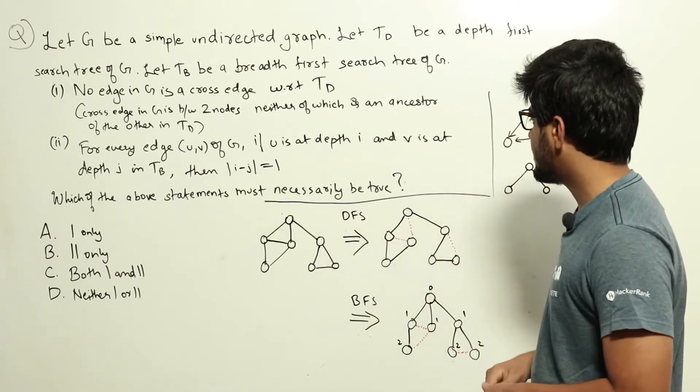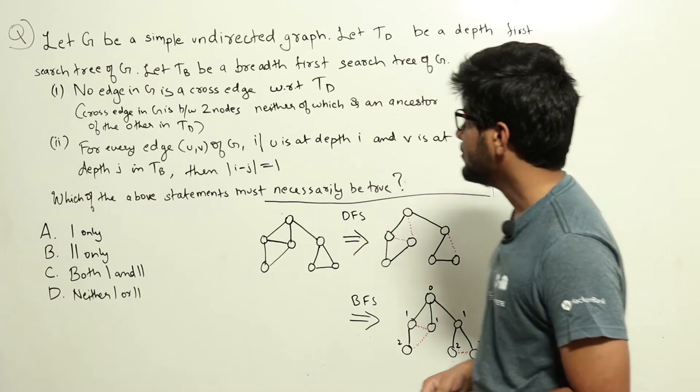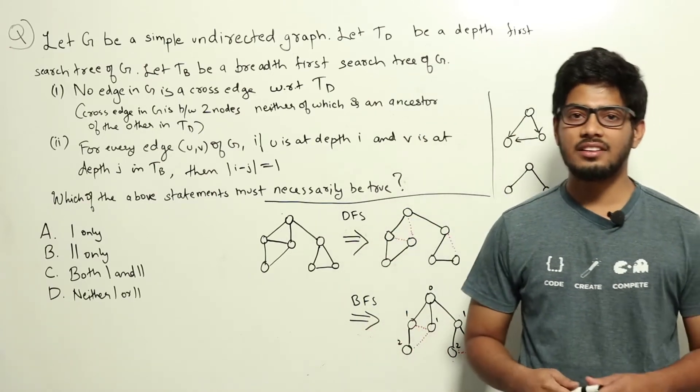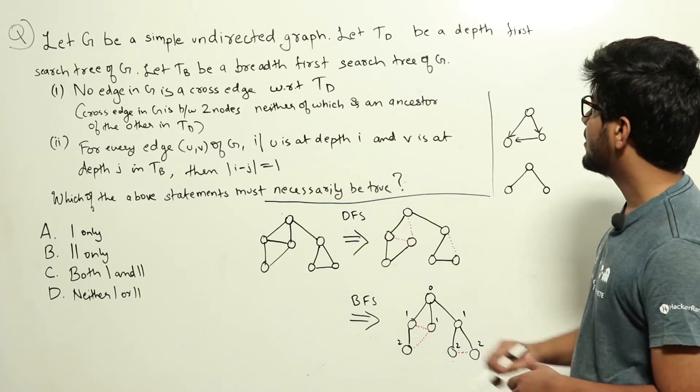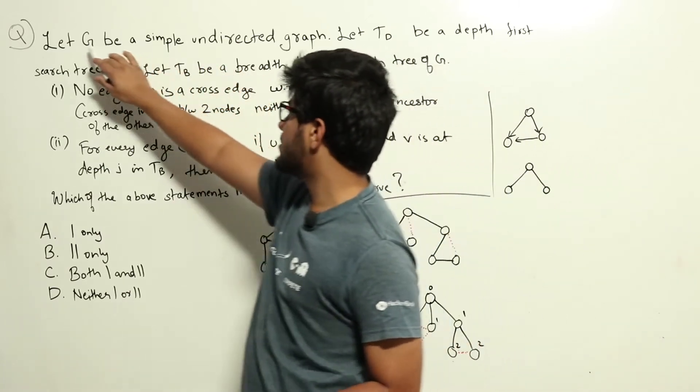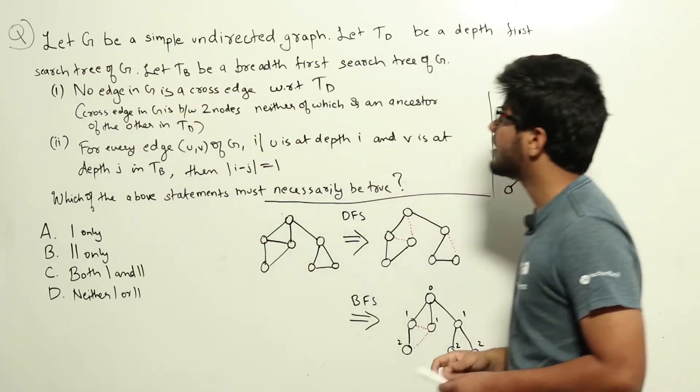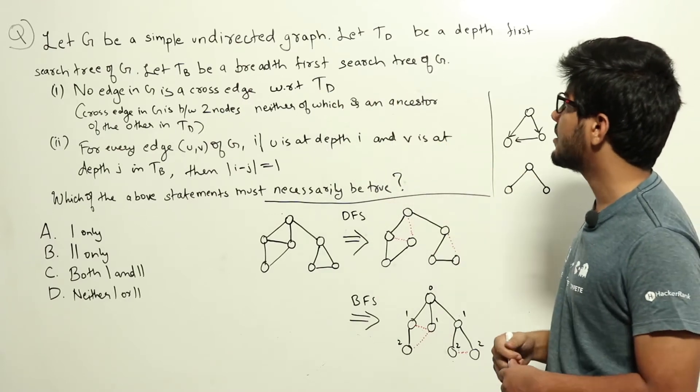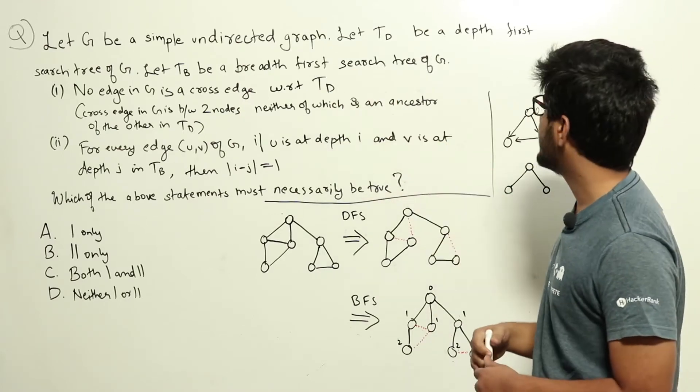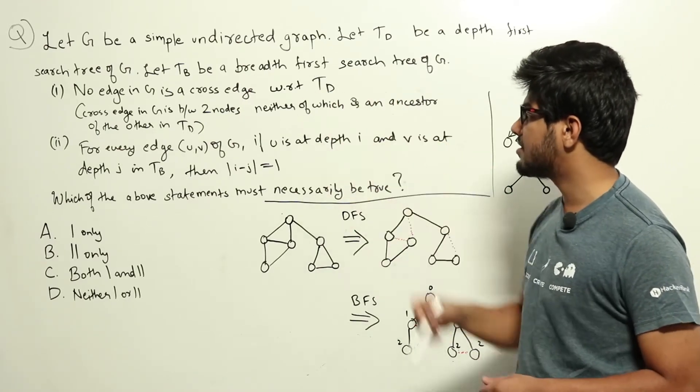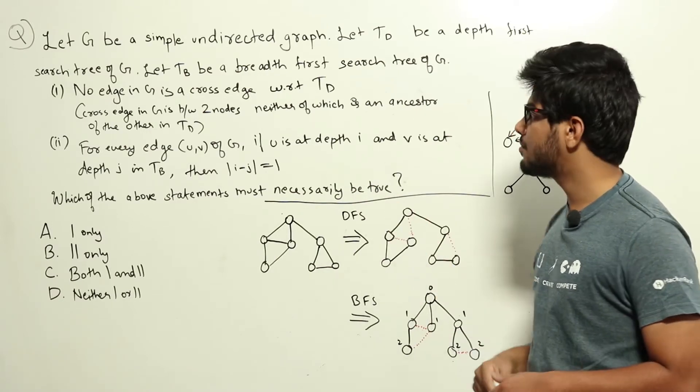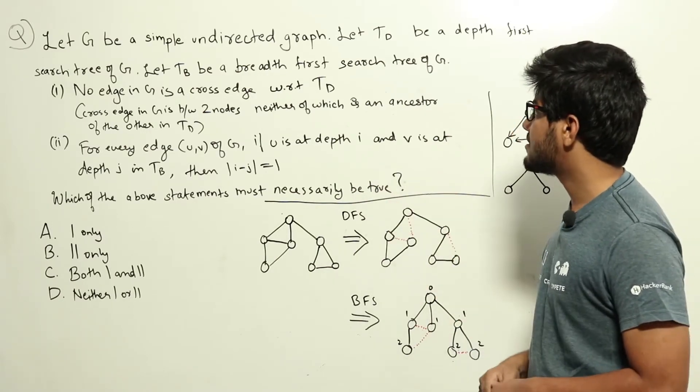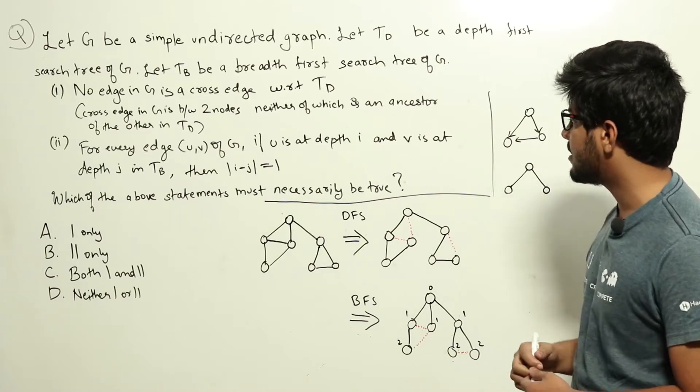Which of the above statements must necessarily be true? So, this is a question from data structures, particularly graphs. We have been given a sample graph G, and they are asking: suppose we are constructing a DFS search tree and BFS search tree, and these two statements are given. They are asking which of these pertaining to the DFS search tree and BFS search tree are necessarily true.